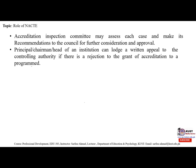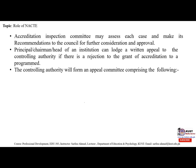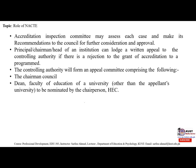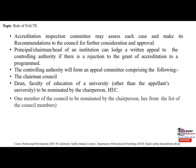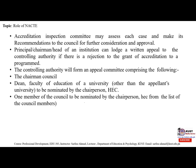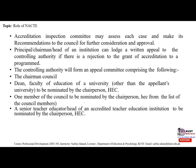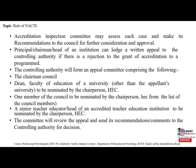The Accreditation Inspection Committee may assess the case and make its recommendations to the council for further consideration and approval. The principal, chairman or head of an institution can lodge a written appeal to the controlling authority if there is a rejection of accreditation for their program. The controlling authority will form an appeal committee comprising: the chairman of the council; the dean of faculty of education of a university other than the appellant's university, nominated by the chairperson of HEC; one member of the council nominated by the chairperson; and a senior teacher educator from an accredited institution. The committee will review the appeal, make recommendations to the controlling authority for a decision.